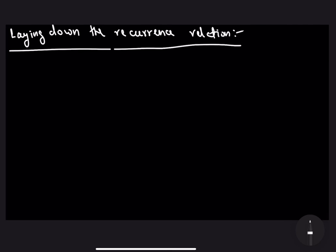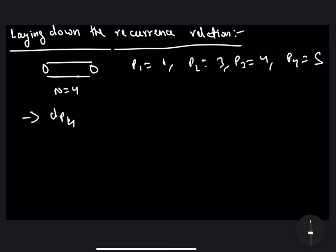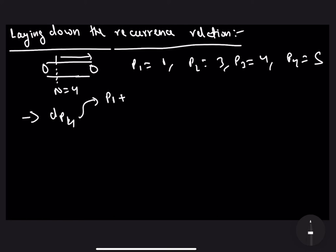To understand the recurrence relation, let's look back at our test case: N = 4, P[1] = 1, P[2] = 3, P[3] = 4, P[4] = 5. The answer is given by DP[4], the maximum price for a rod of length 4. When computing DP[4], we can scoop out a rod of length 1, sell it at P[1], and then solve the remaining rod of length 3 optimally, giving P[1] + DP[3].